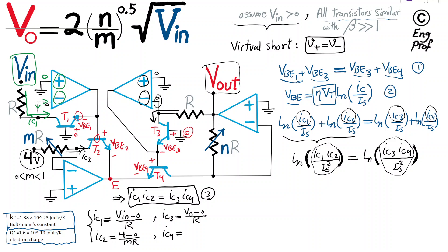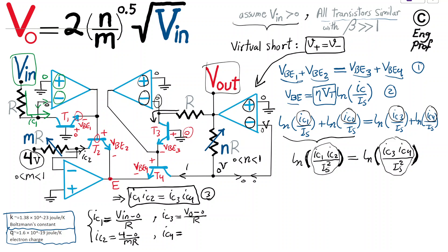For IC4: nothing enters or leaves the op-amp input terminal. Virtual short again forces the negative terminal to 0 volts. The current flows from Vout through the potentiometer NR — where N is a ratio between 0 and 1 — directly into the collector of T4. So IC4 = Vout / NR.